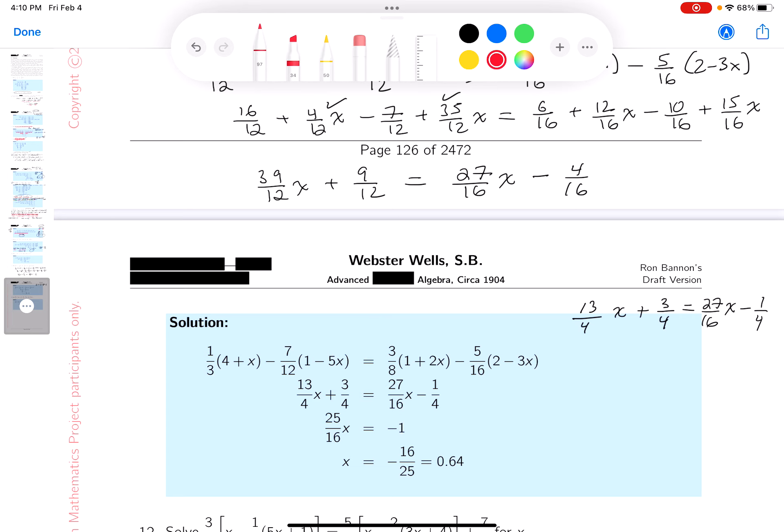All right that's pretty simple. Now what I'm going to do which may seem peculiar to you, I'm going to add one quarter to both sides and I'm going to subtract thirteen quarters of an x from both sides.